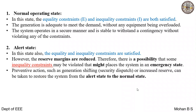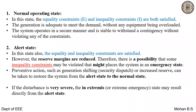Preventive control action must be taken — by increasing the reserves and restoring the system from alert to normal state. If the disturbance is very severe, it leads directly to extreme emergency state, thus bypassing the emergency state.